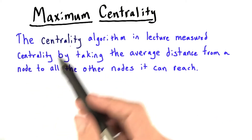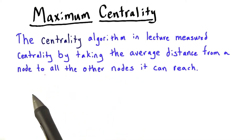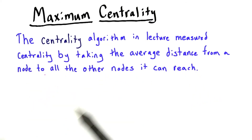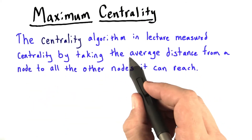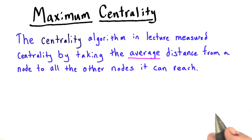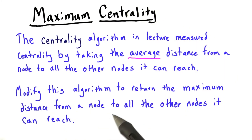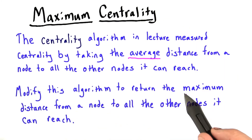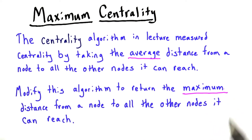In lecture, we introduced a centrality algorithm that measures centrality by taking the average distance from a node to all the other nodes it can reach. We want you to modify this algorithm to return the maximum distance from a node to all the other nodes it can reach.